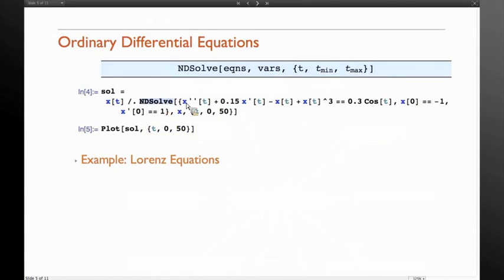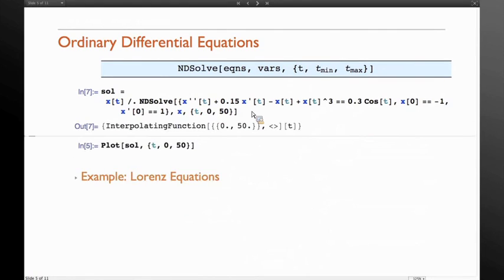Here's a very simple example. You have NDSolve. The first one is your differential equation. You give it a set of initial conditions, which is for x and x prime, and you give it the independent variable and the limits of integration, so it's from 0 to 50. When I solve this, I get the result back in the form of an interpolating function.